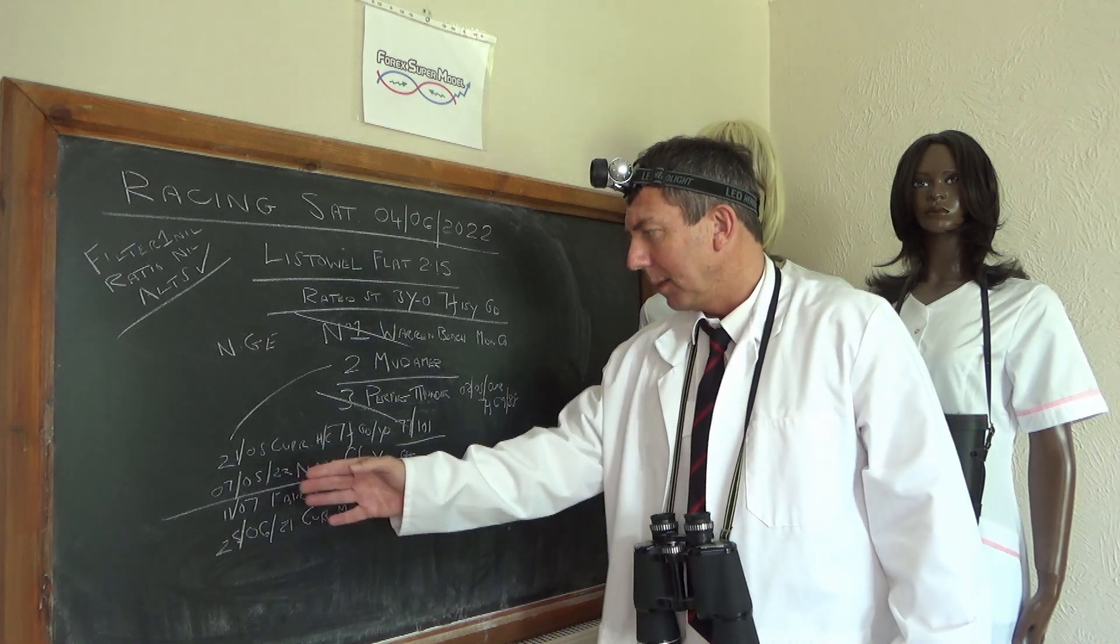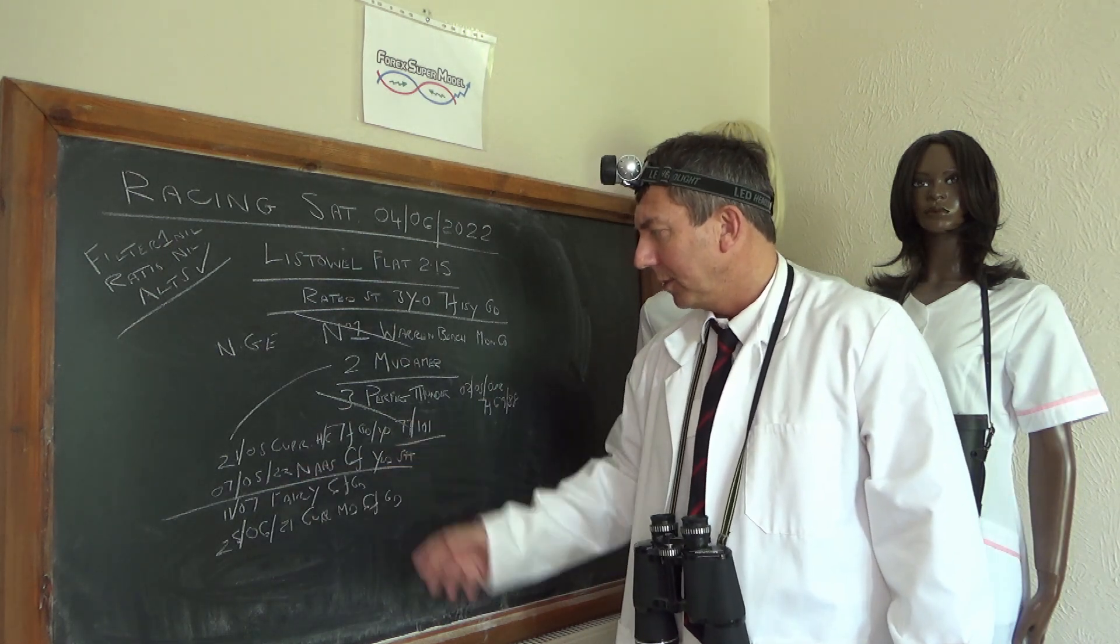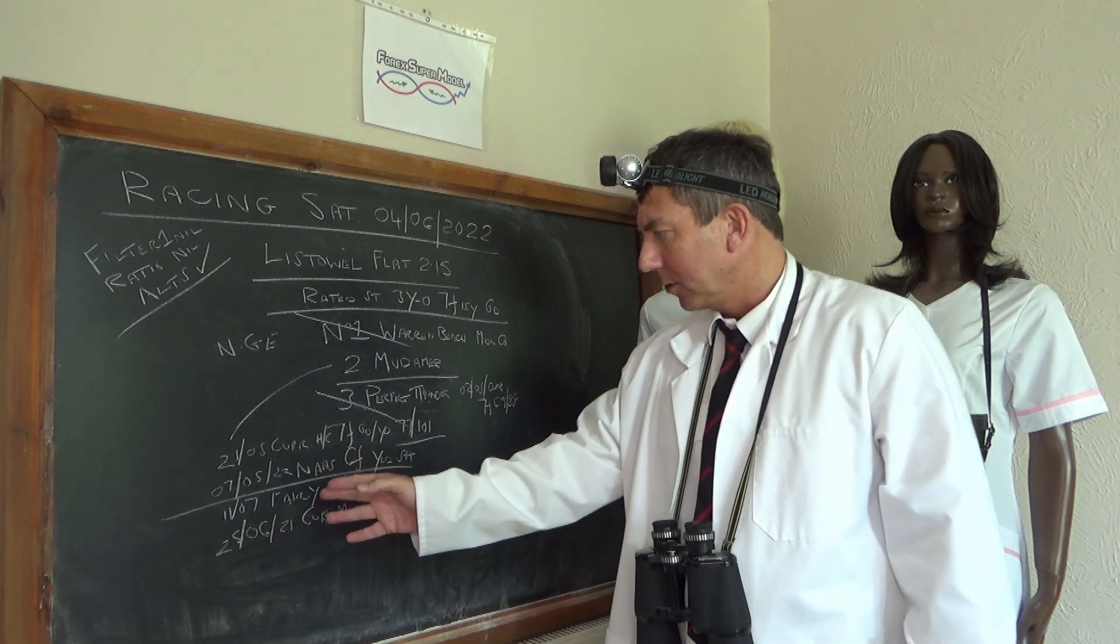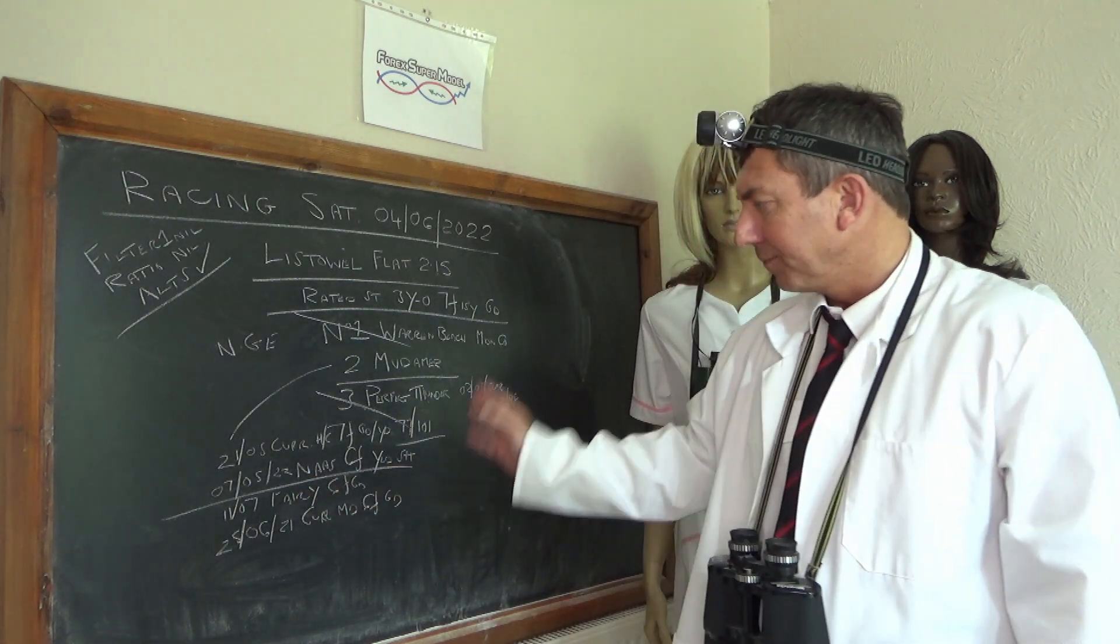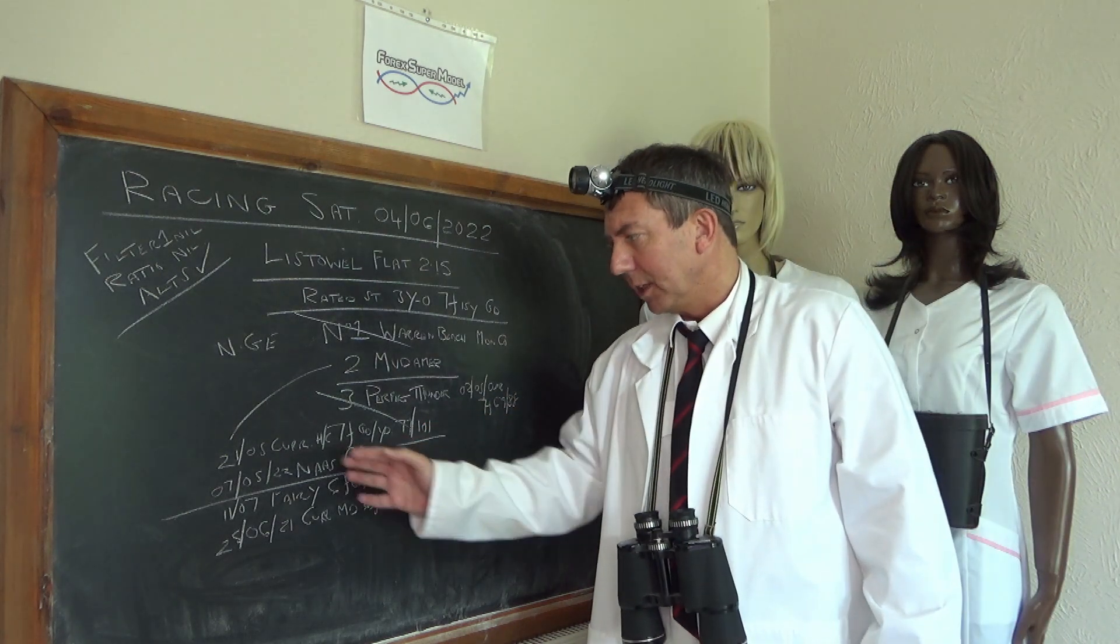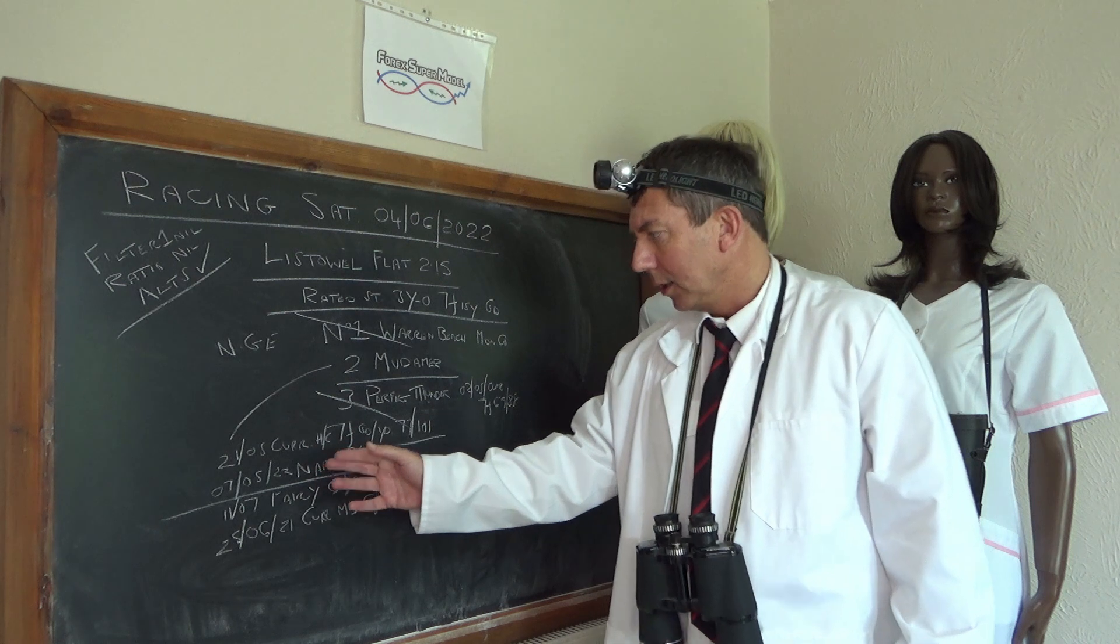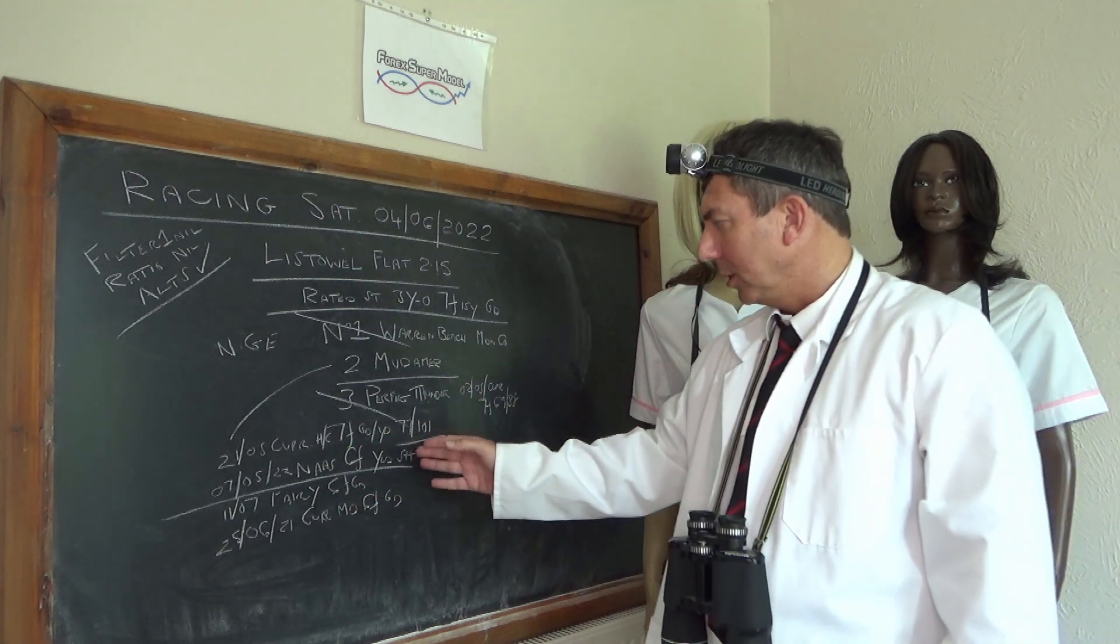And then this year it's come out on yielding and soft, good to yielding. 7th of the 5th, 22 Nass, 6 furlong. But the key race here is this 21st of the 5th, the last run, Curragh, handicap, 7 furlong, good to yielding.